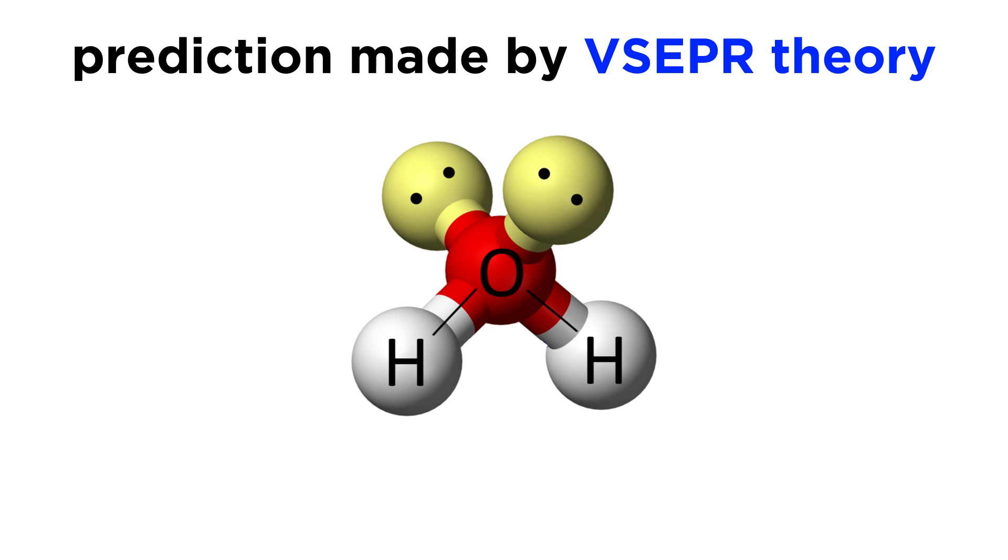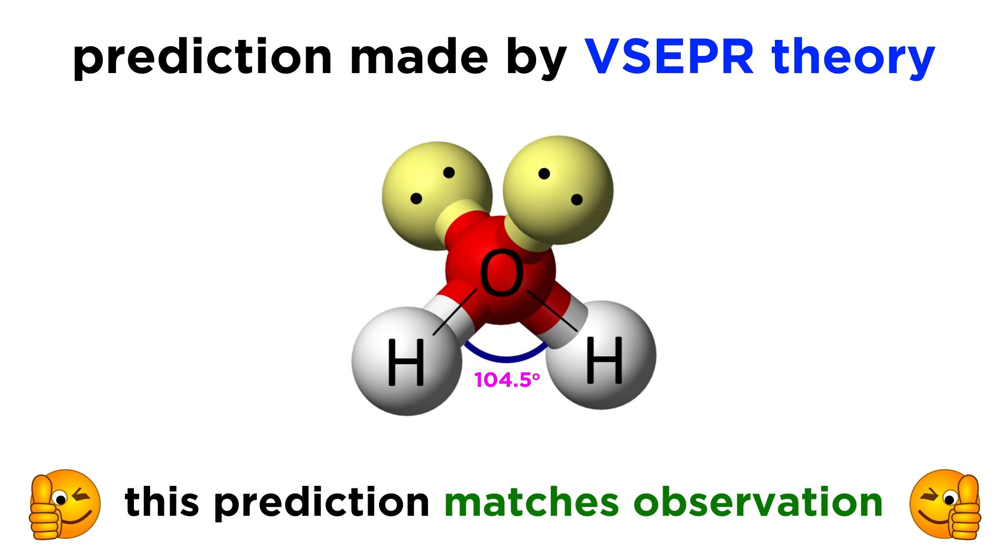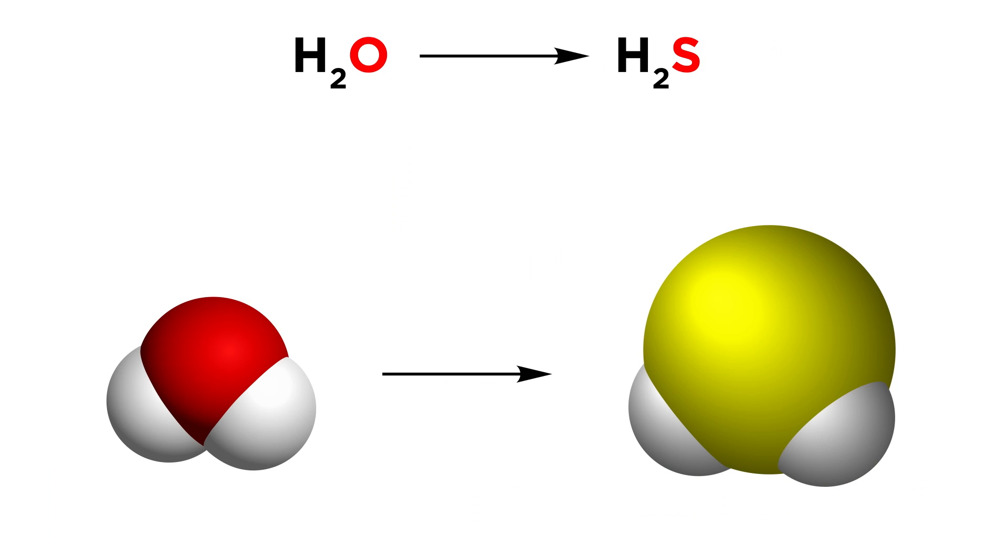Take this water molecule. In the context of VSEPR theory, we would look at the central oxygen atom with its two bonding pairs of electrons and two lone pairs of electrons, and with its four electron domains, we would call it sp3 hybridized, exhibiting tetrahedral electron domain geometry and bent molecular shape. Because the lone pairs offer a little more repulsion than bonding pairs, that causes the HOH bond angle to contract a bit from the typical 109.5 degrees we see for tetrahedral geometry, leaving us at 104.5 degrees. This is what we observe in nature, so water conforms perfectly to VSEPR theory.